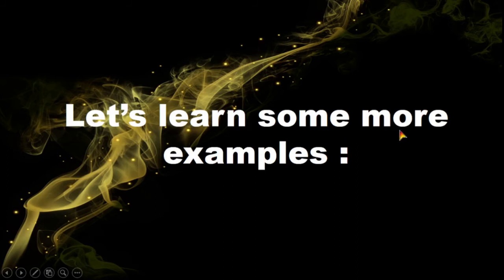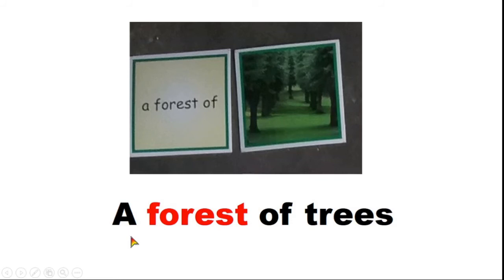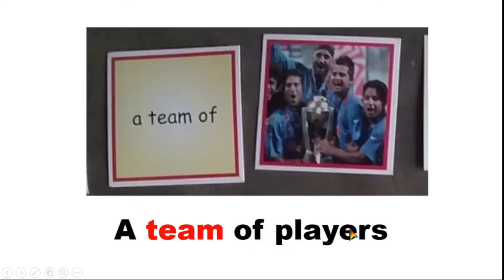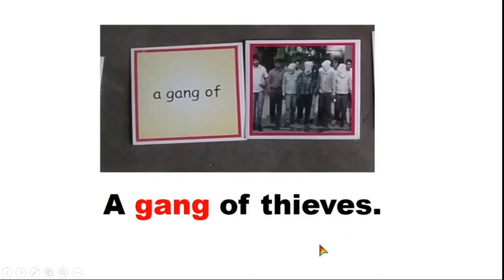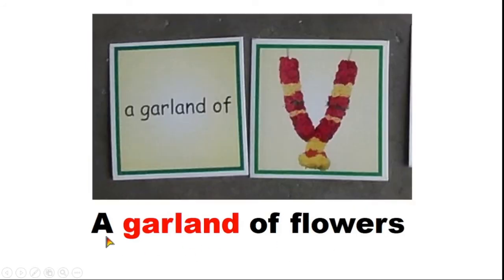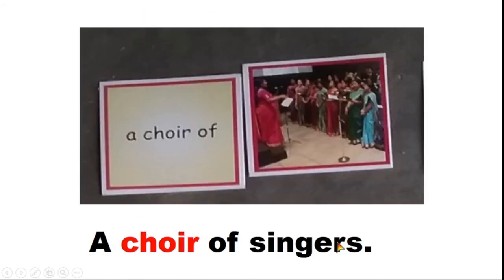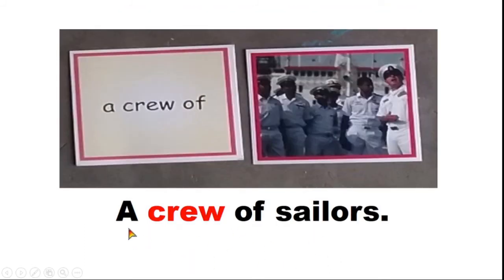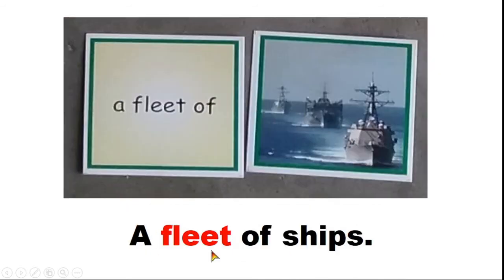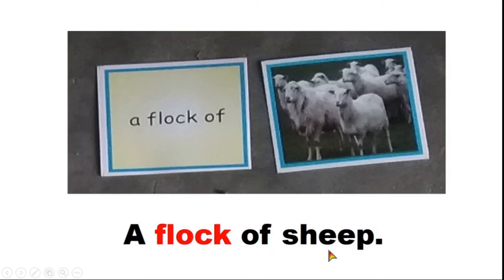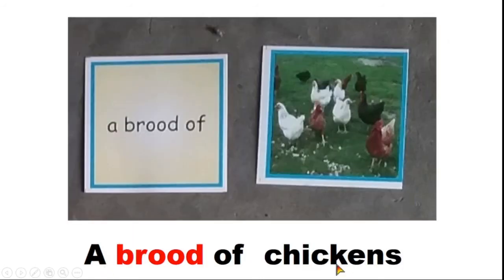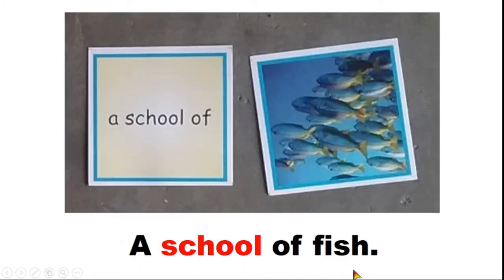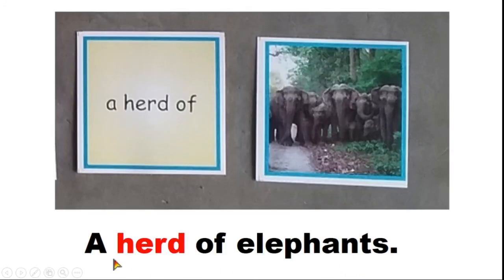Let us learn some more examples: a team of singers, a galaxy of stars, a pair of shoes, a crew of sailors, a fleet of ships, a flock of sheep, a brood of chickens, a school of fish, a herd of elephants.